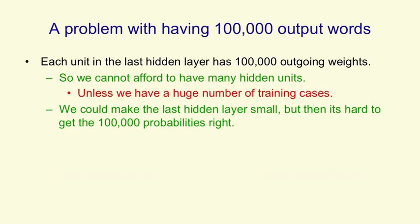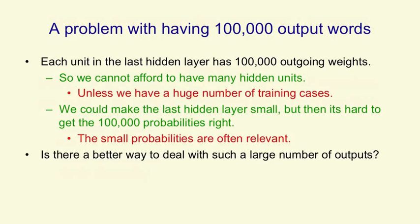It's not just the big probabilities we need. A very large number of words will have small probabilities and the small probabilities are often relevant. It might be that the speech recognizer has to decide whether it's two different rare words, and then it's very relevant which of those is more common in the context even though both of them are pretty unlikely. The question is, is there a better way to deal with such a large number of outputs and we'll see several different ways of doing that in the next video.